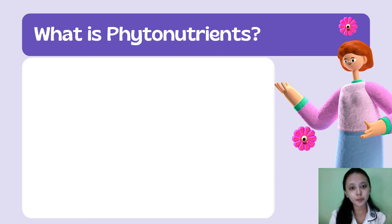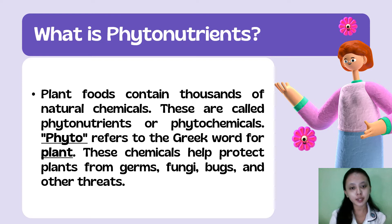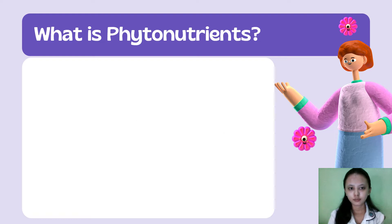So, what are phytonutrients? Plant foods contain thousands of natural chemicals. These are called phytonutrients or phytochemicals. 'Phyto' refers to the Greek word for plant. These chemicals help protect plants from germs, fungi, bugs, and other threats.